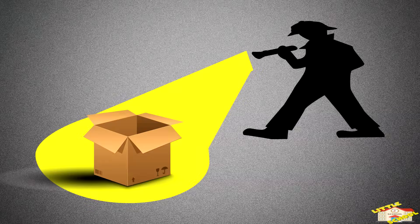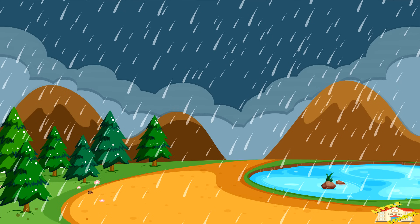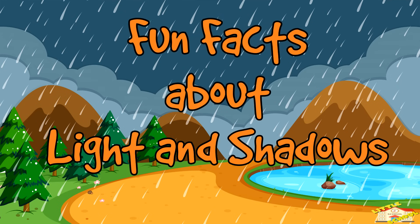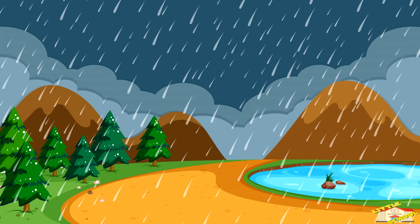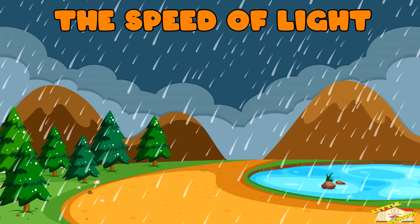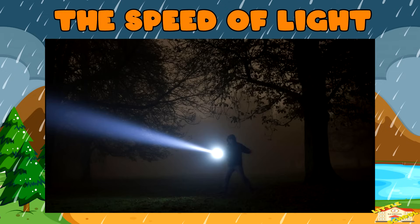So light helps us see, but when something blocks the light, we get shadows. Now here are some fun facts about light and shadows. The speed of light: light is the fastest thing in the universe. Light can travel about 186,000 miles per second.